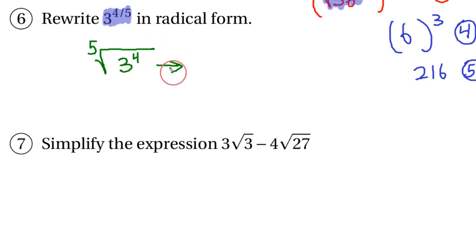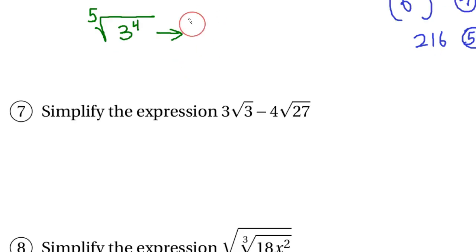Now, if I wanted to, I could calculate three to the fourth power, which is 81. So the other way we could write this is as the fifth root of 81.